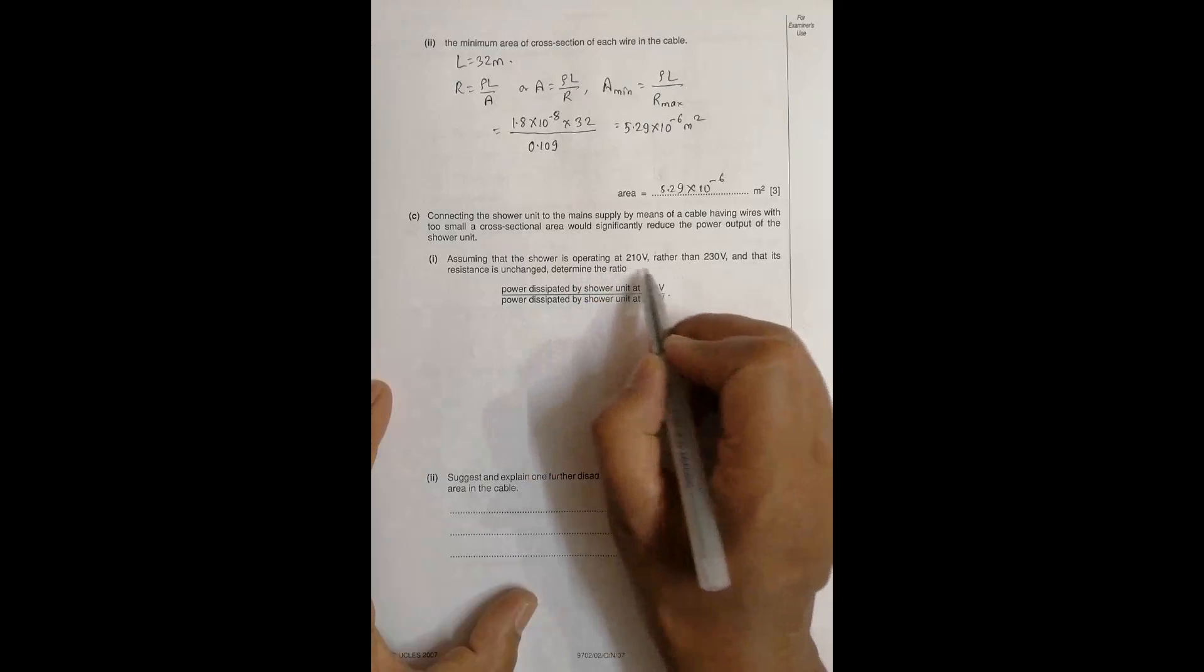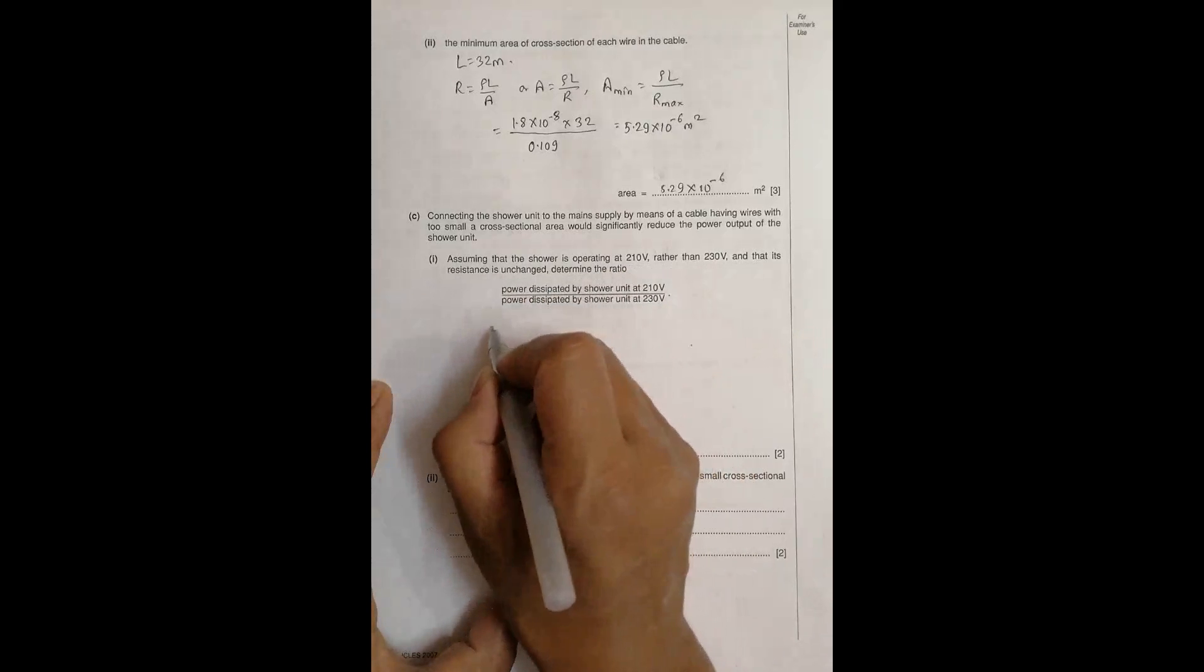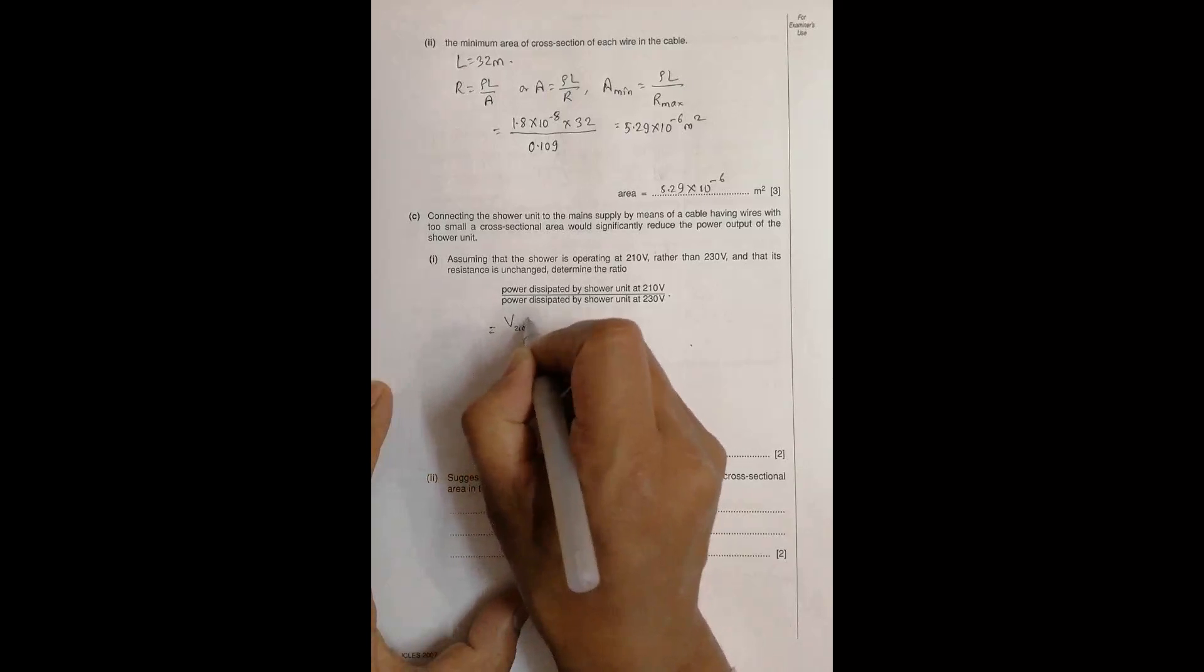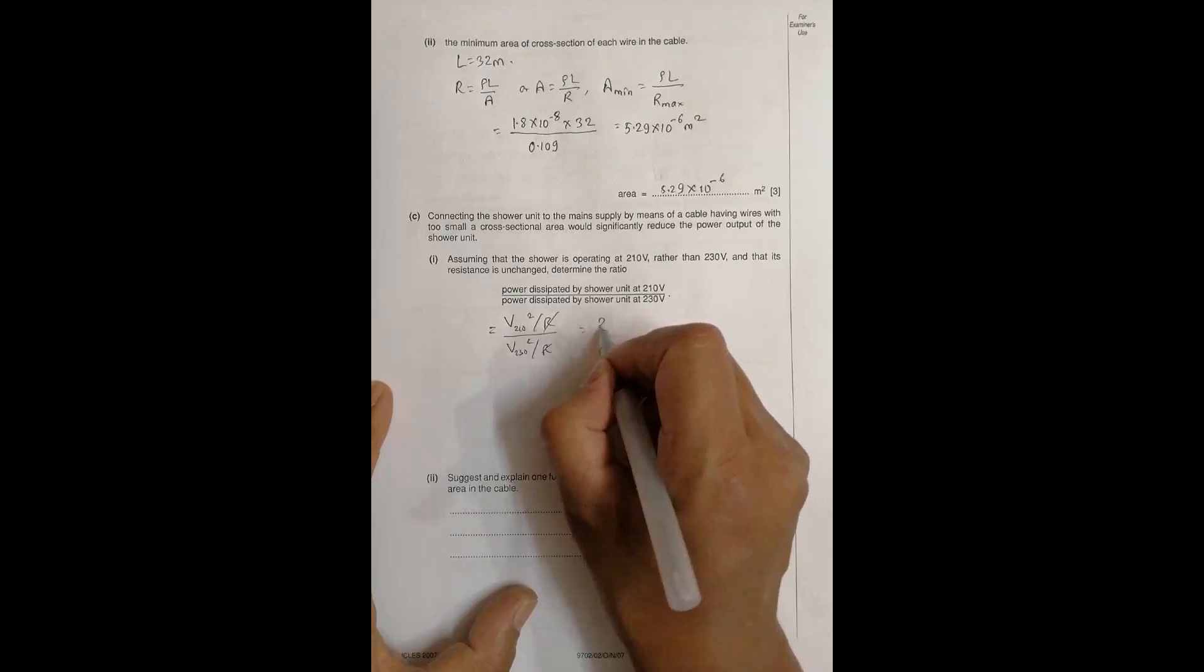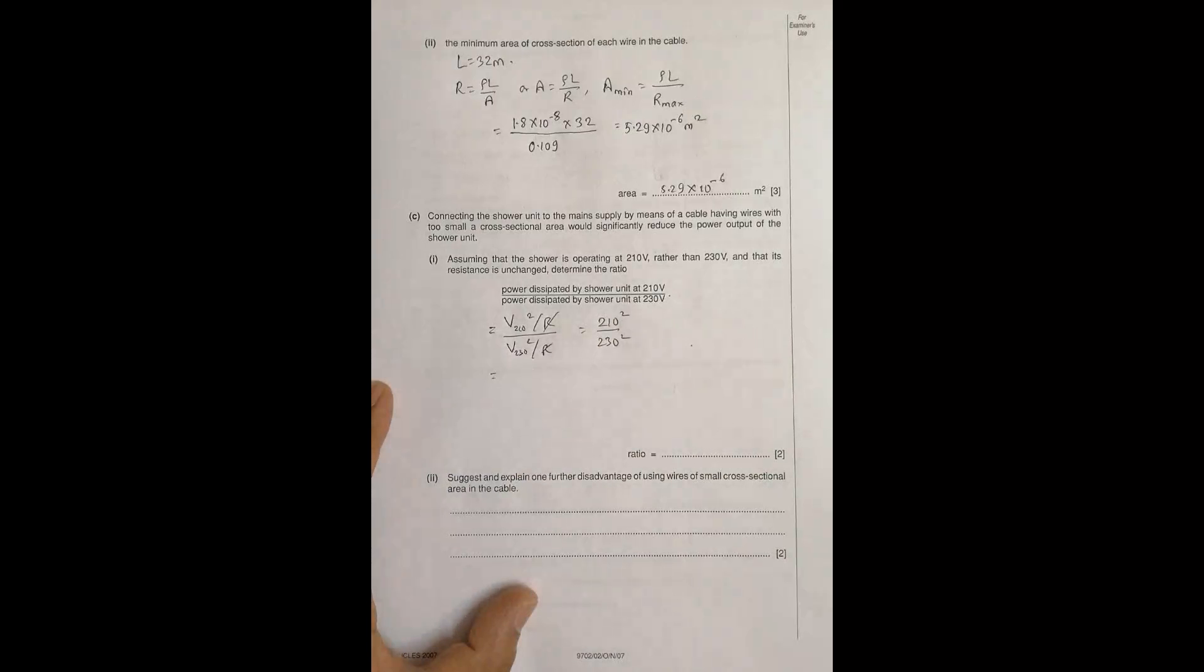Assuming the shower is operating at 210 volt rather than 230 volt and that its resistance is unchanged, find the ratio of power. Power ratio equals V 210 square by R divided by V 230 square by R. R is gone, it is simply 210 square by 230 square, and that becomes equal to 0.83.